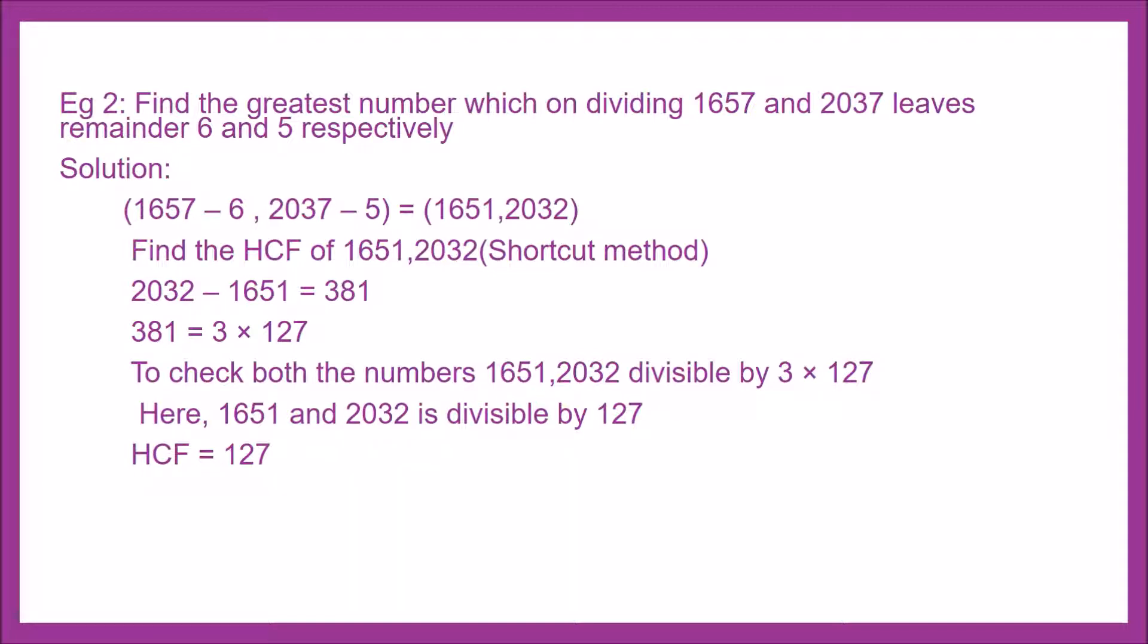Solution: Same method. 1657 minus 6, 2037 minus 5 equals (1651, 2032).